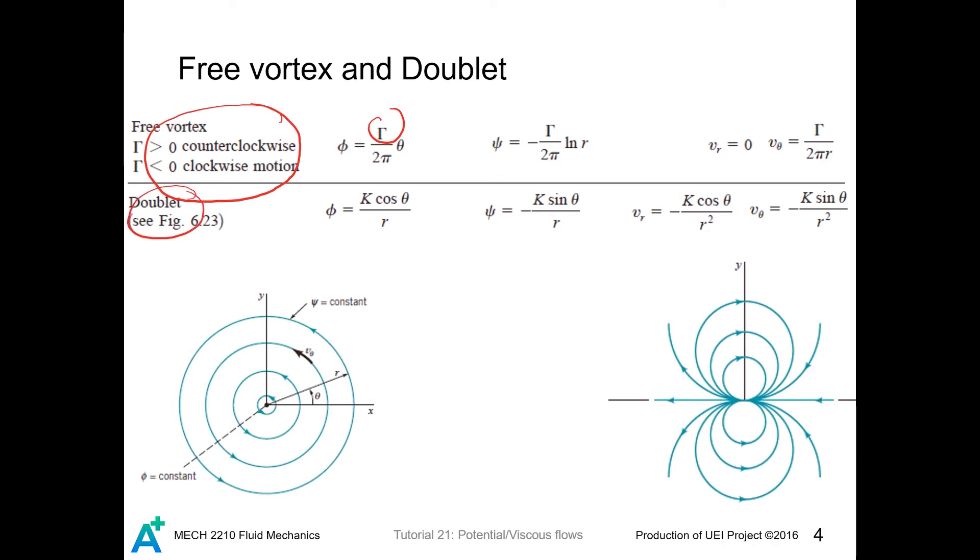And about doublet, let's sketch the xy plane. If we put one source here and we put one sink here, and we continually decrease the distance between the source and the sink, then eventually a doublet is formed.